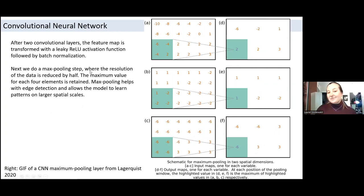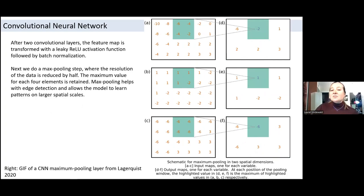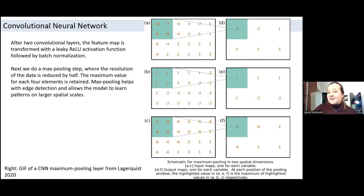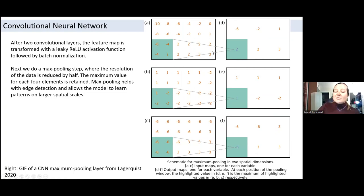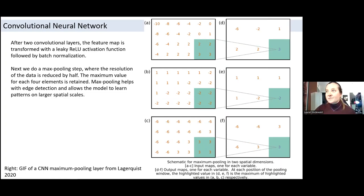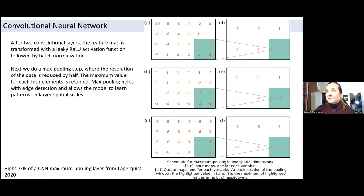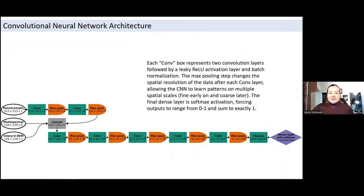So after two convolutional layers, the feature map is transformed with a leaky ReLU activation function followed by batch normalization. I won't get into details on these steps here, but please feel free to ask me at the end. Next we do a max pooling step where the resolution of the data is reduced by half. So that's what you can see in this GIF here. So as this kernel moves across the matrix, the maximum value for each of the four elements is retained. Doing max pooling as opposed to, for example, mean pooling helps with edge detection and also allows the model to learn, and the pooling in general allows the model to learn patterns at multiple spatial scales. So after each pooling step, we're looking at patterns on coarser spatial scales.